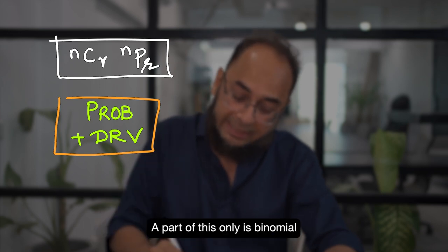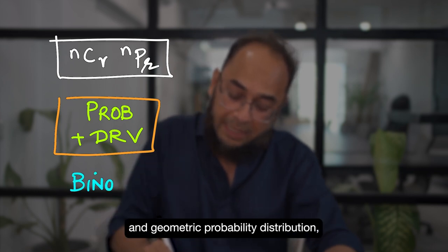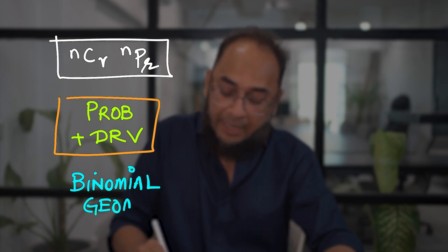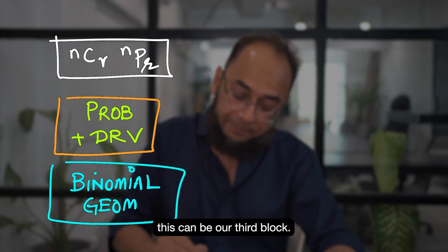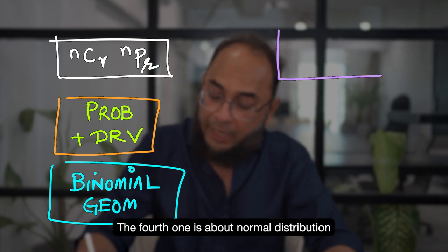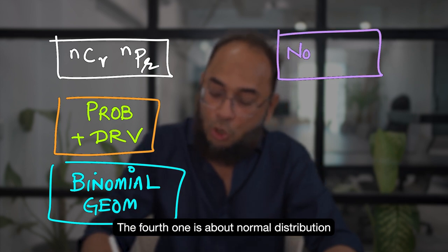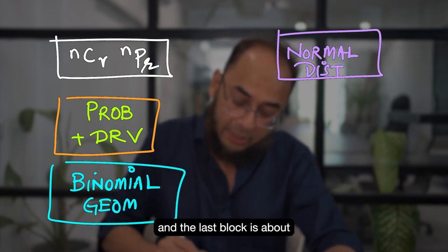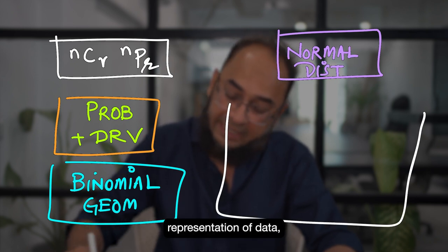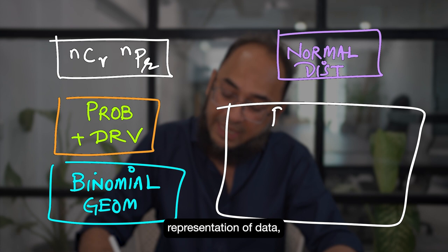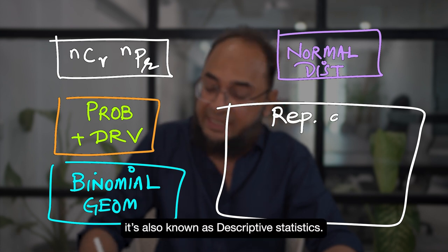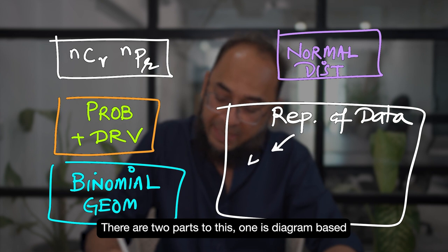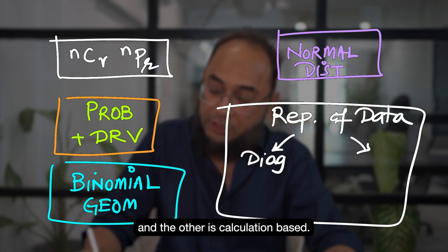Then there is some part covering binomial and geometric probability distribution. And the last block is about representation of data, also called descriptive statistics. Iske do hisse hain — eek diagram based hai, eek calculation based hai.